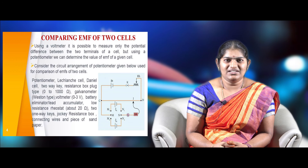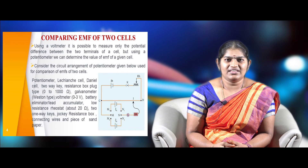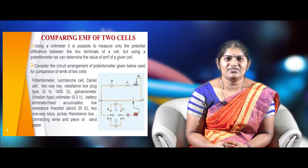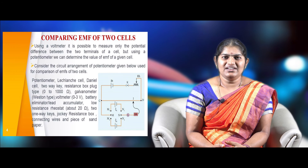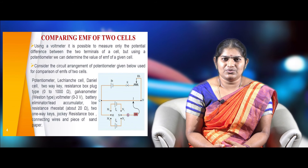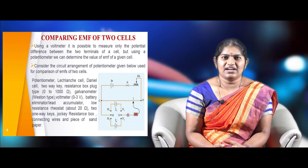The apparatus consists of a potentiometer, a Leclanche cell, a Daniel cell, a two-way key, and a low-resistance plug-type resistance box ranging from 0 to 1000 ohms. Also required: a Weston-type galvanometer, a voltmeter of range 0 to 3 volts, a battery eliminator, a lead accumulator, two one-way keys, a low-resistance rheostat in the range of 20 ohms, a jockey, a resistance box, connecting wires, and a piece of sandpaper.